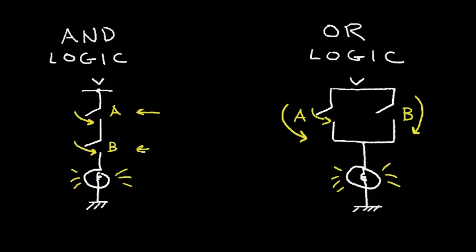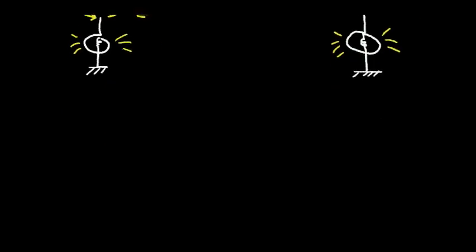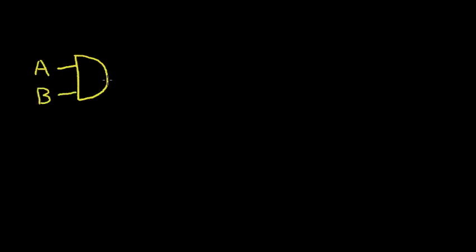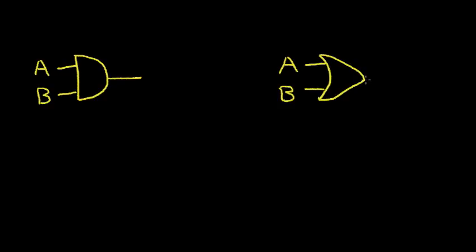In electronics, we have some symbols for the AND logic and the OR logic. The symbol for the AND logic has input A and input B and an output. The OR logic symbol is slightly different — it has a curve, with input A in our example, input B, and an output.